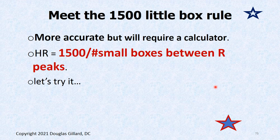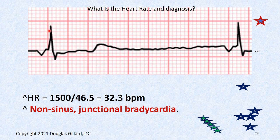The 1500 little box rule is much more accurate than the 300-150-100 rule. You count the number of small boxes between the RR peaks, then use the formula: 1500 divided by the number of small boxes gives you the exact heart rate. Let's try it: counting the small boxes between R peaks — about 46 — so 1500 divided by 46.5 comes out to 32.3 beats per minute.